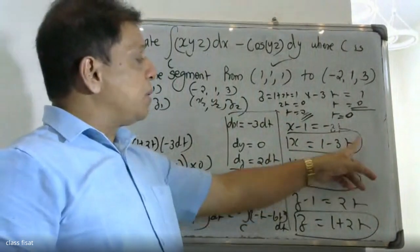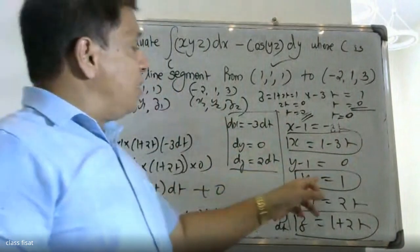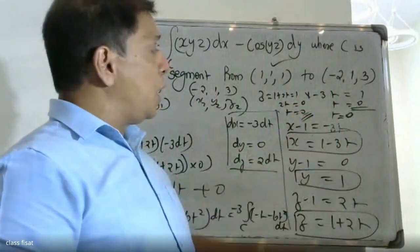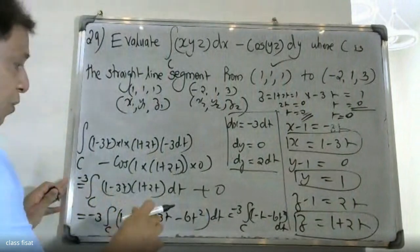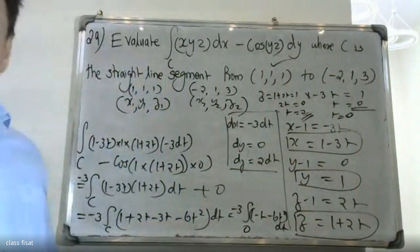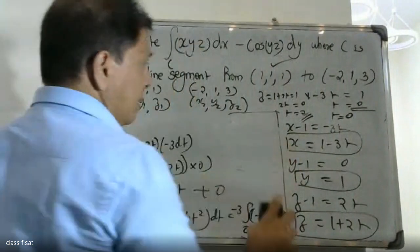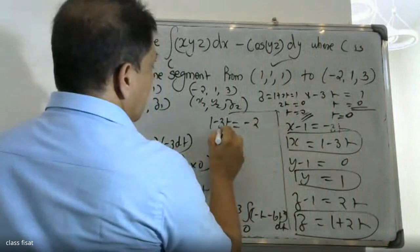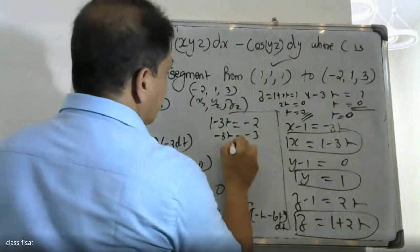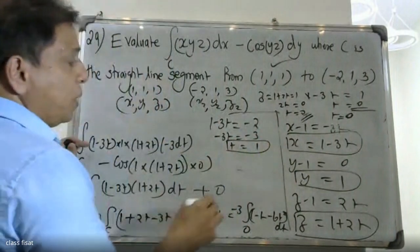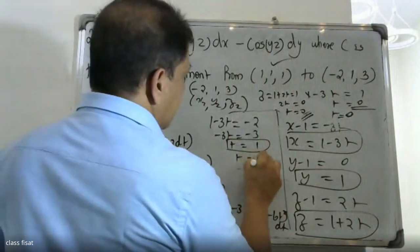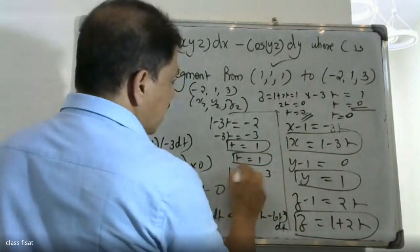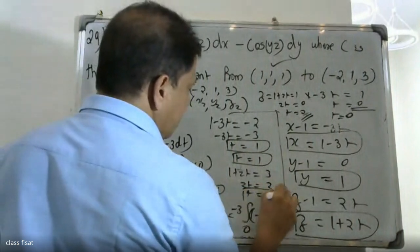First case: 1 minus 3t equals 1, then t equals 0. In terms of Y equals 1, then t equals 0. Third case: 1 plus 2t equals 1, then t equals 0. Now, 1 minus 3t equals minus 2. Then 1 minus 3t equals minus 3, so t equals 1. Then 1 minus 2t equals 1. Then 3x equals 1. Then 1 plus 2t equals 3, then 2t equals 2, so t equals 1.